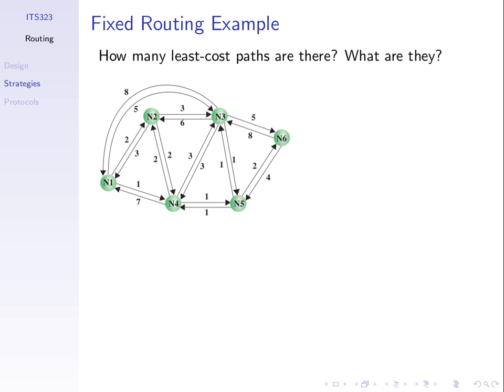Adaptive routing tries to learn the current conditions of the network - the topology and link costs - and recalculates routes as needed so we always aim to get the least cost routes in our routing table. We still use routing tables and send data the same way as fixed routing.